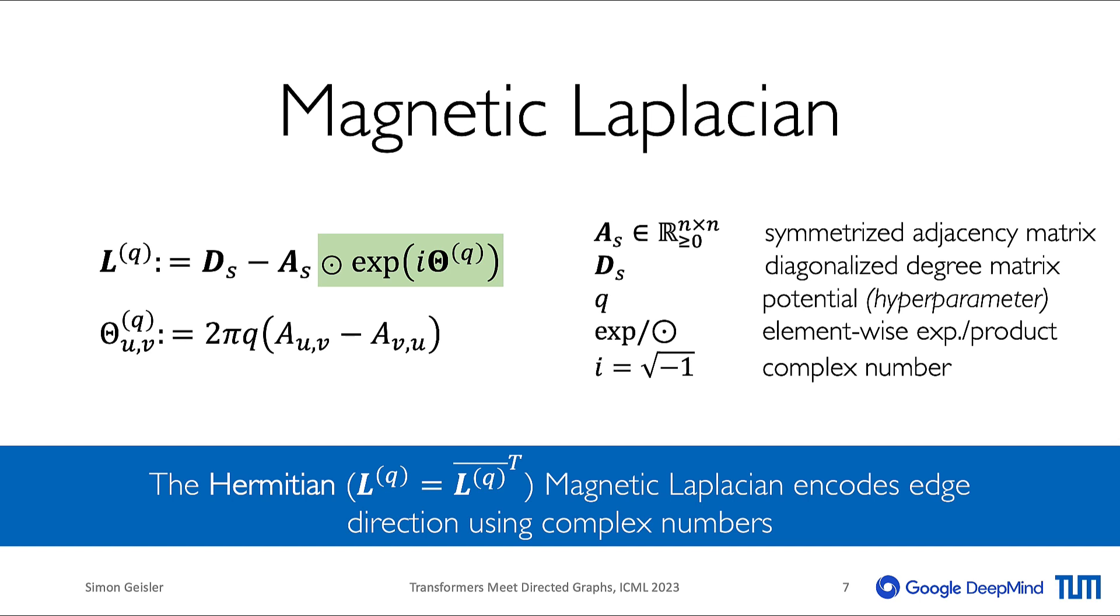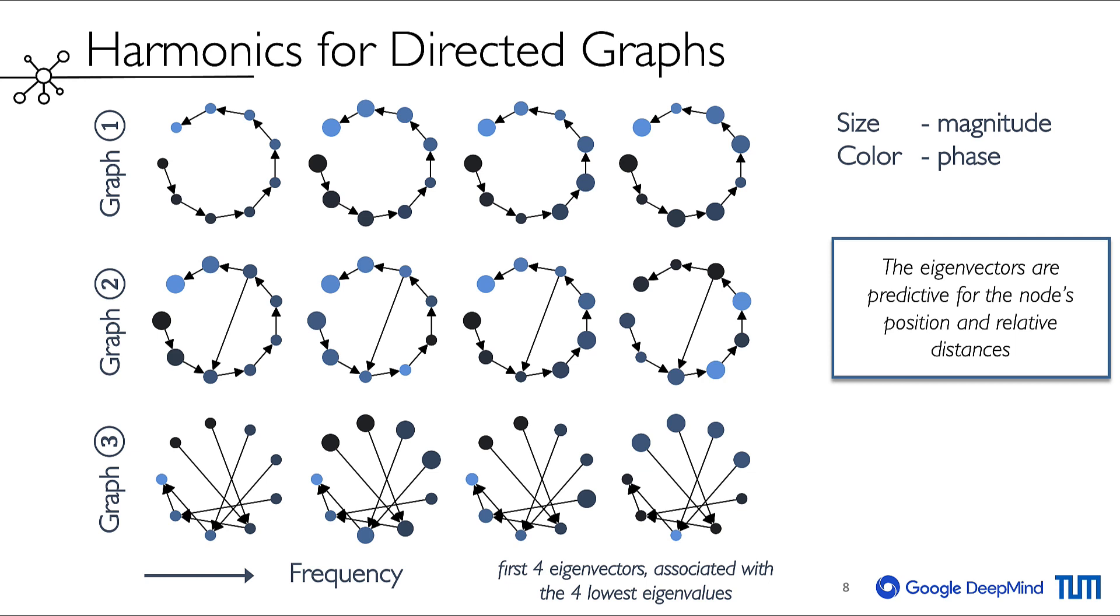the resulting magnetic Laplacian is Hermitian, the natural generalization of real symmetric matrices to the complex domain. By construction, the magnetic Laplacian behaves similarly to the graph Laplacian, while also encoding directionality.